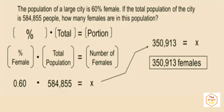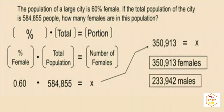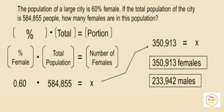So how many males were there? All you have to do is subtract the number of females from the total population. The number of males is 233,942. Notice that the sum of those two values gives 584,855.